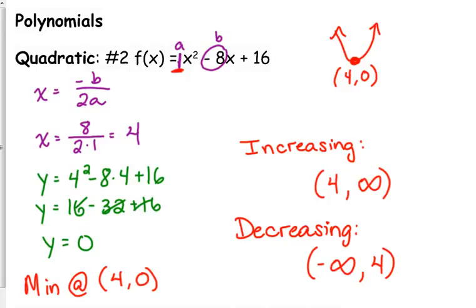It is decreasing from negative infinity to 4, and then it is increasing from 4 to positive infinity. We did all that without a calculator because we can calculate the vertex by hand.